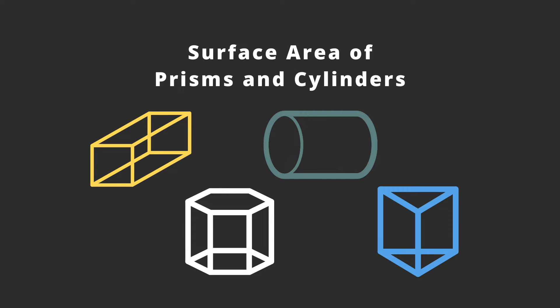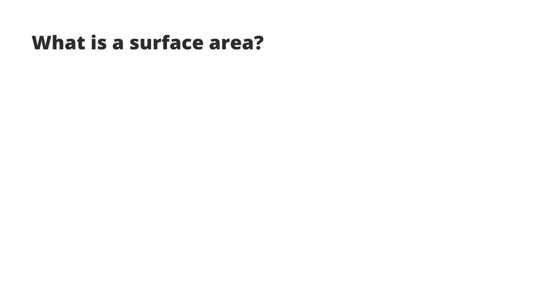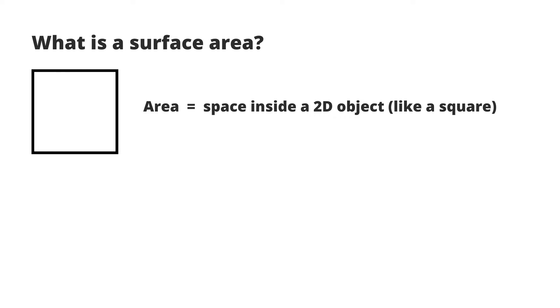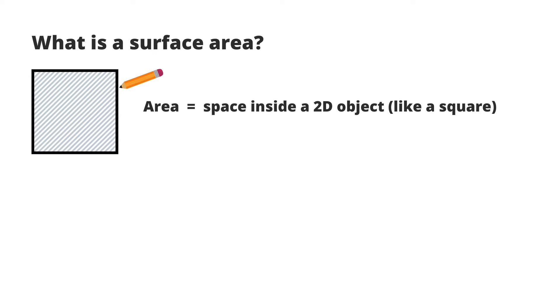Before we get into the problems, let's first start off with what does surface area even mean? Well, the area of a 2D shape, like a square, is all of the space inside of the shape, right? In other words, you can take a pencil and color in the area of the square, which we've learned we can calculate by multiplying base times height.